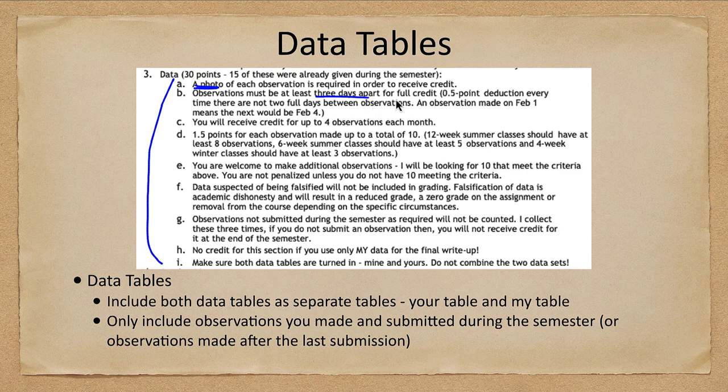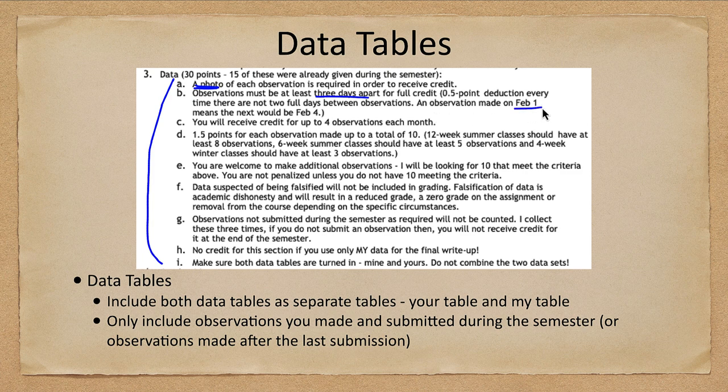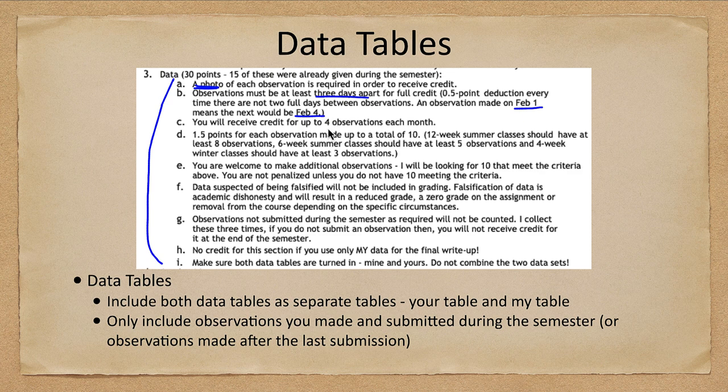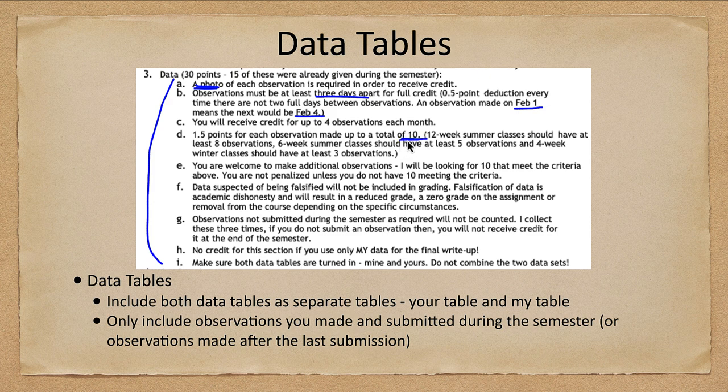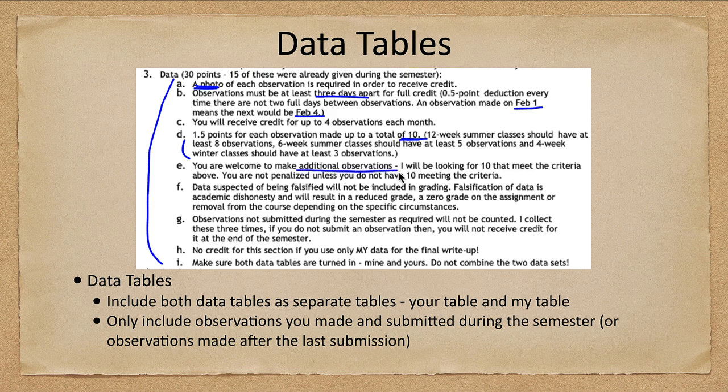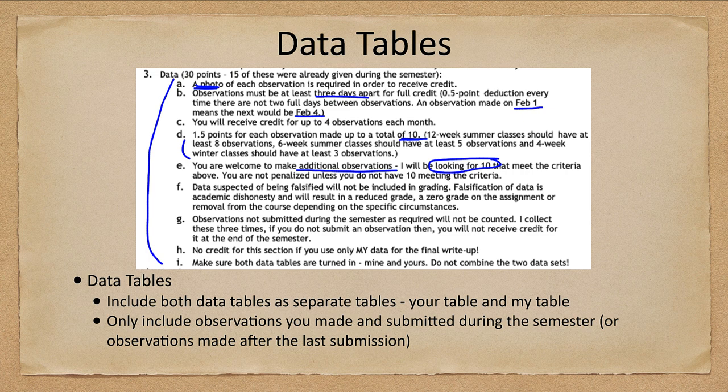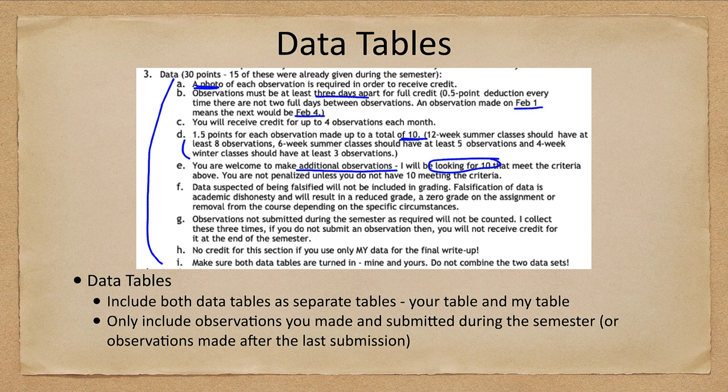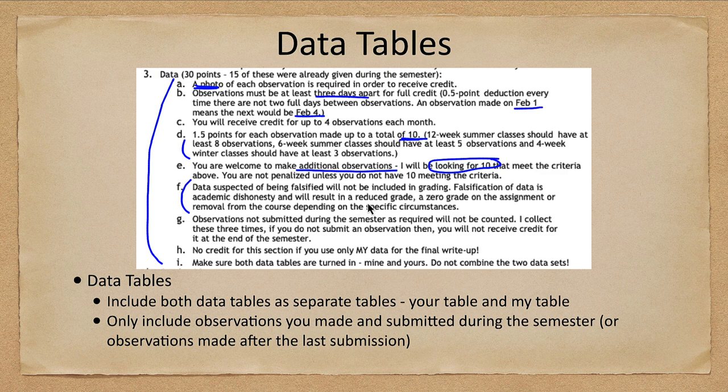Observations must be three full days apart for credit. If you've made more than 10 observations, that's fine, but you want to skip two days between observations. Do not delete any observations you already submitted. Submit everything you submitted—I will look through them to decide that you've got 10 that meet the criteria. That's a total of 10 observations needed for a full semester class. You can always make additional observations. If you submit 20 observations and some are too close together, I will not penalize you for that. Submit your own data—if you submit fake data, you will risk getting a zero on the entire assignment and/or removal from the course.